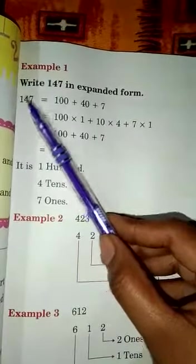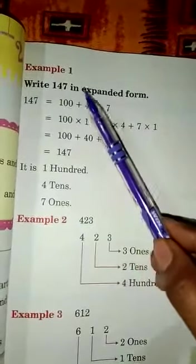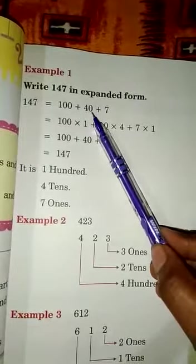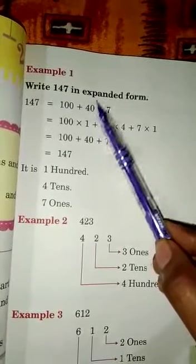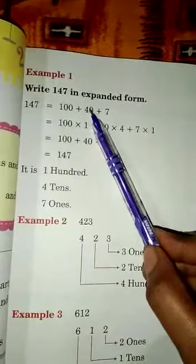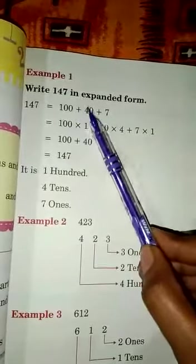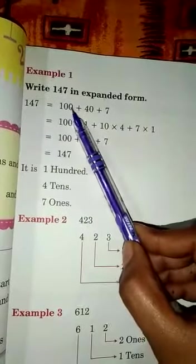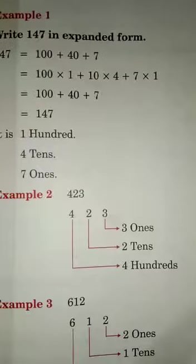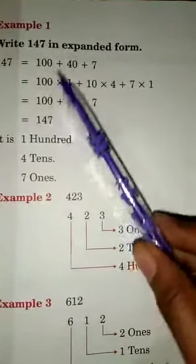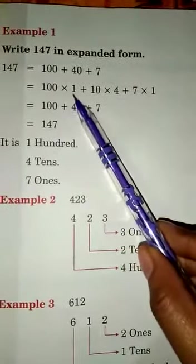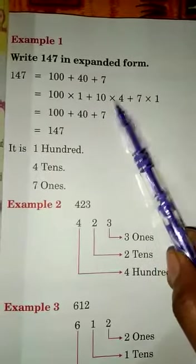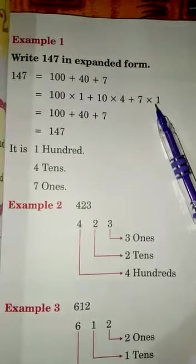In expanded form, 100 plus 40 plus 7. Seven ones, 40 means 4 in tens place. So 40 in tens place and 100, one in hundred place. We will write in expanded form, 100 into 1, then 10 into 4, then 7 into 1.